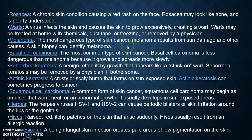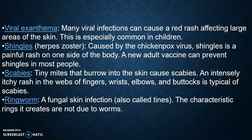Herpes — the herpes viruses HSV-1 and HSV-2 can cause periodic blisters or skin irritation around the lips or the genitals. Hives are raised, red, itchy patches on the skin that arise suddenly and usually result from an allergic reaction. Tinea versicolor is a benign fungal skin infection that creates pale areas of low pigmentation on the skin. Viral exanthem — many viral infections can cause a red rash affecting large areas of the skin, which is especially common in children.